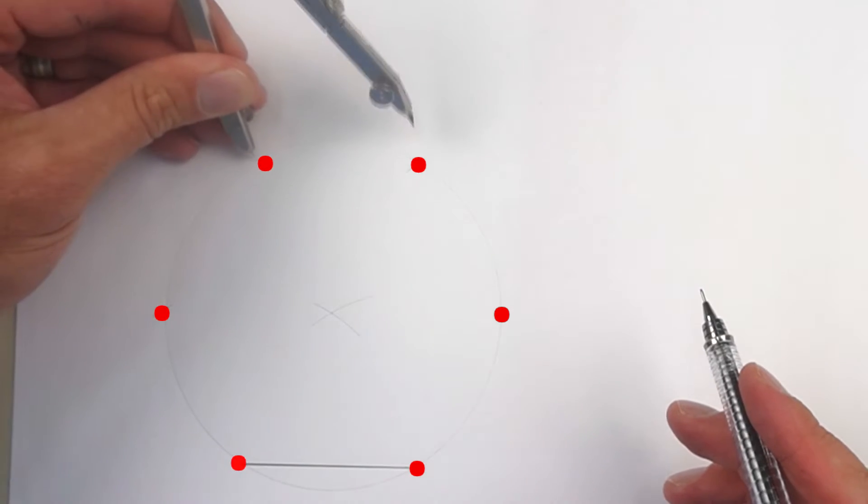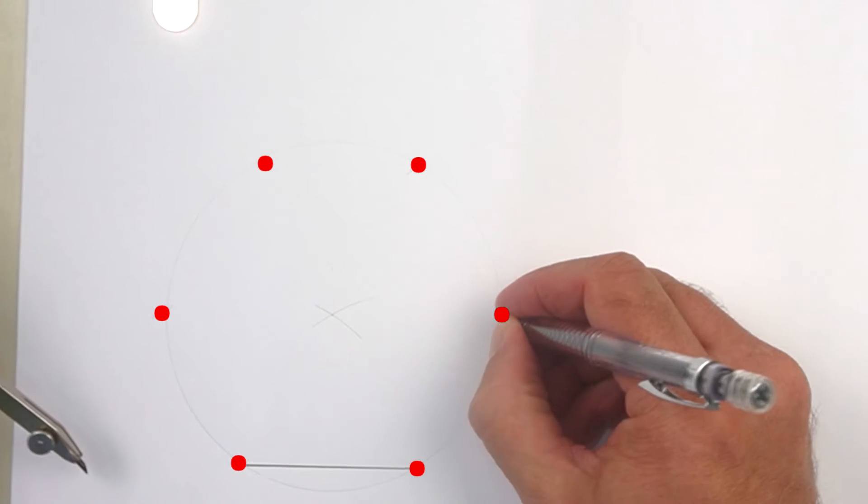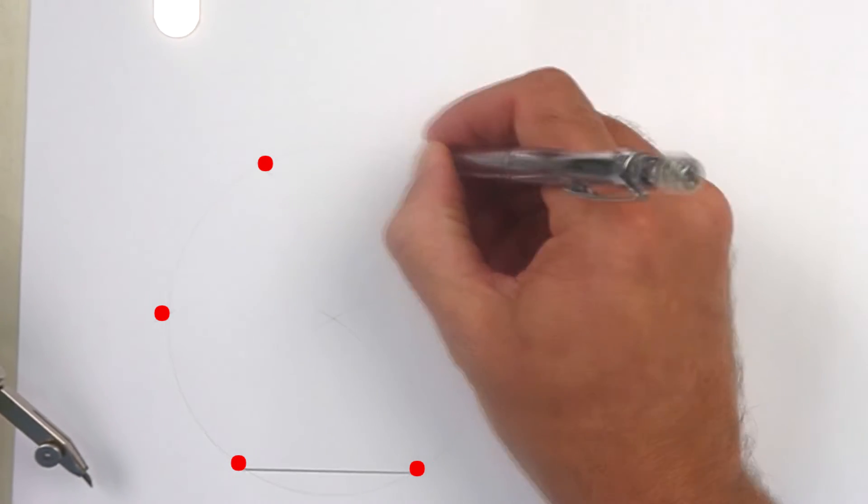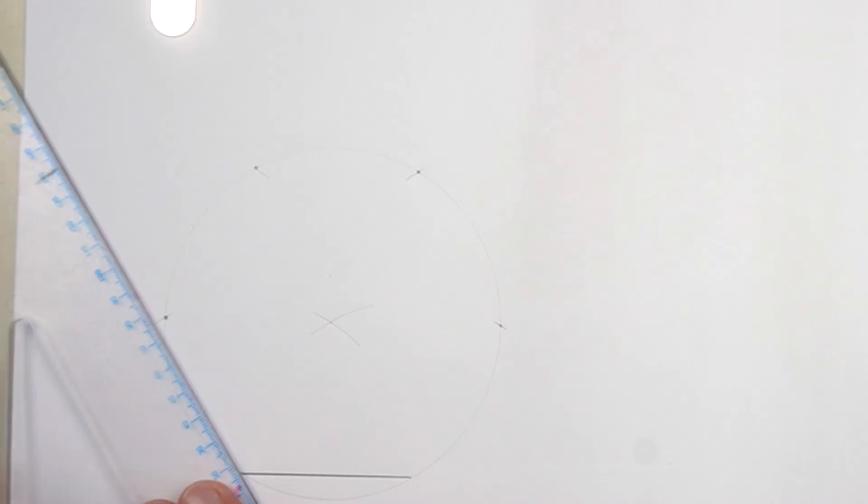It all lines up, so these are the corners of our hexagon. Once you've done that, you can use any ruler or triangle to complete the hexagon.